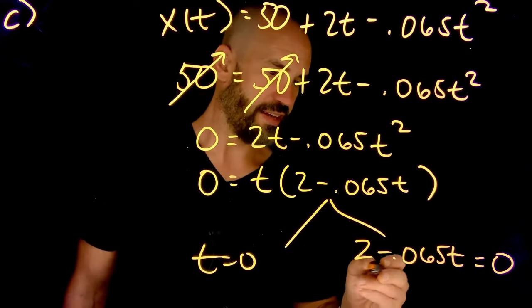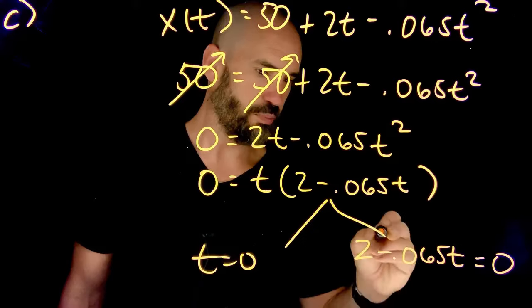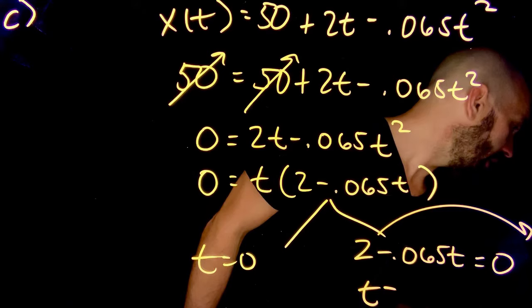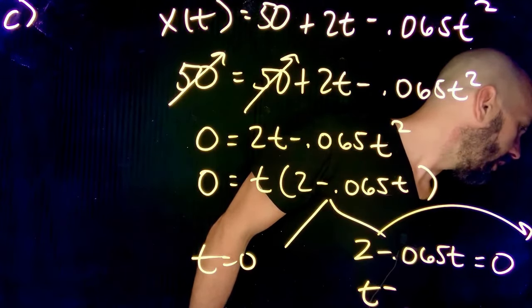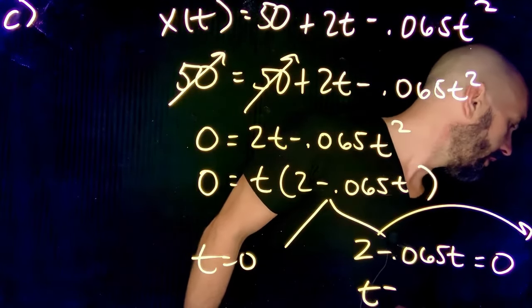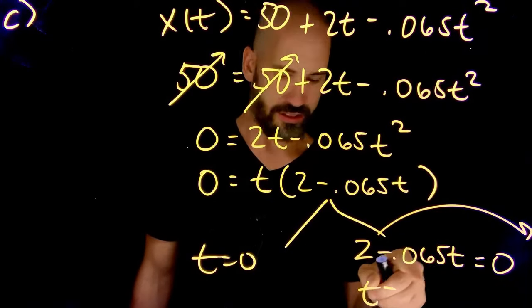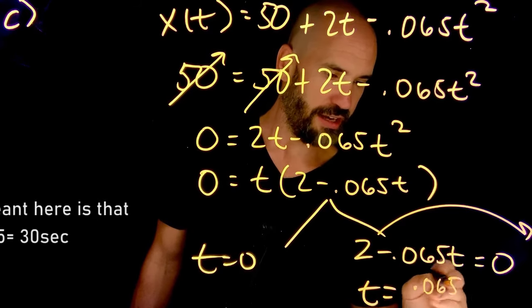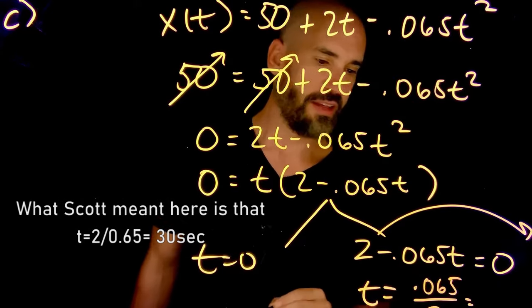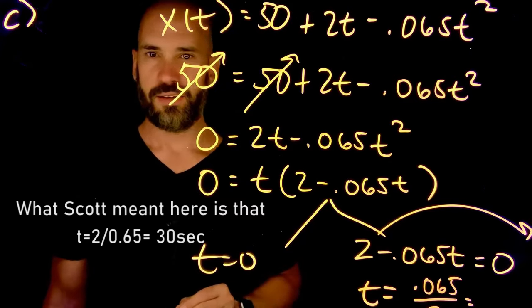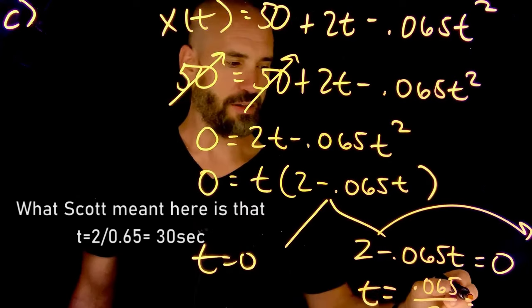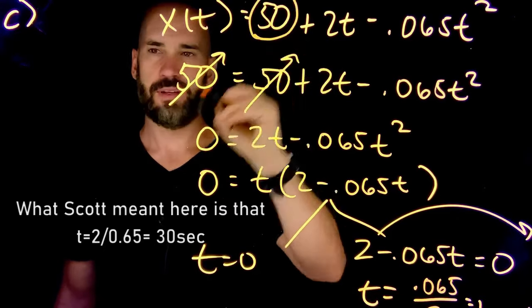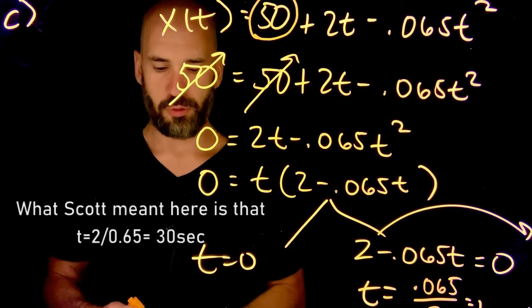And that will give us a time of, if we bring 2 to the other side and solve for t, I'm getting an answer of, well, whatever 2 divided by 0.065 is. I don't have it in my notes, but I encourage you guys all to put that in your calculator really quick and put your answer in and find out when that time occurs where it's back at the starting point. I'll leave you with that.